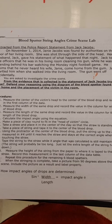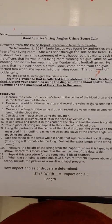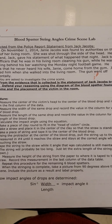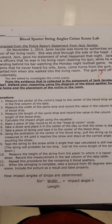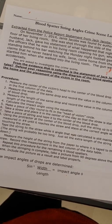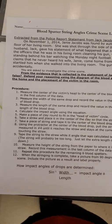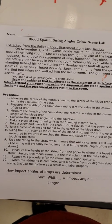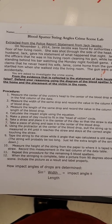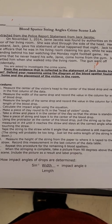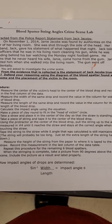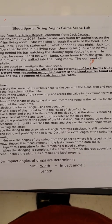Welcome to another episode of how to do this lab. This lab is called Blood Spatter String Angles Crime Scene Lab. There's a story about Jack Jacobs and his wife Janie. Your job is to use the evidence you collect to determine if what Jack is saying is true or not — you're trying to corroborate his story and determine the manner of death. It's definitely not natural, so your choices are homicide, suicide, or accidental.